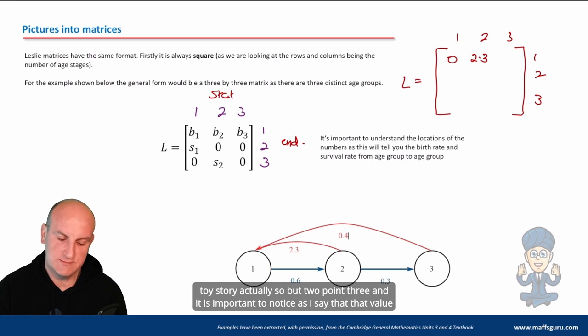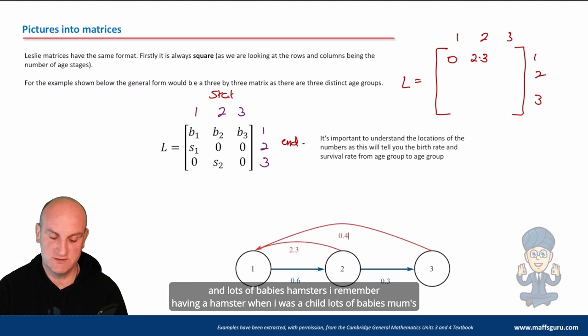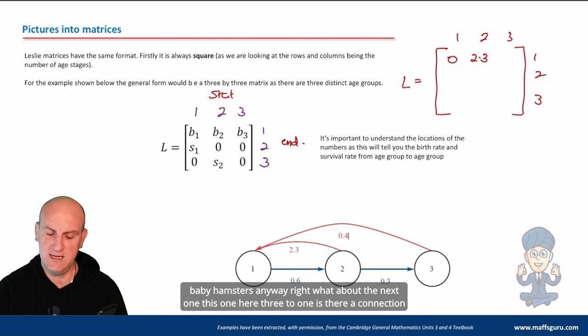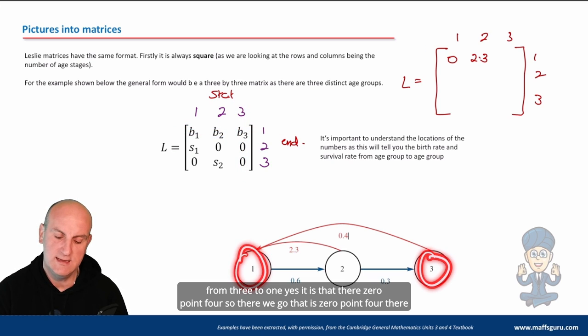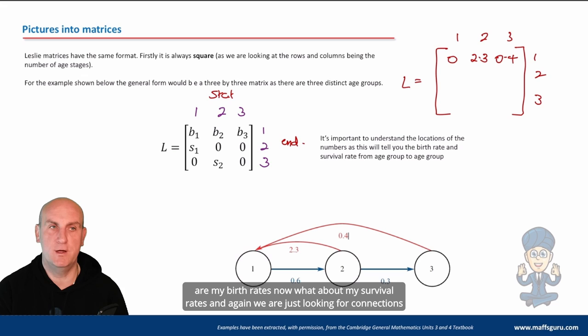So, but 2.3. And it is important to notice, as I say, that that value can be greater than one because there are populations or there are species who have lots and lots of babies. Hamsters. I remember having a hamster when I was a child. Lots of babies. Mum's face would melt every time those hamsters, which we thought were two boy hamsters, had little baby hamsters. Right, what about the next one? This one here. 3 to 1. Is there a connection from 3 to 1? Yes, it is that there. 0.4. So there we go. That is 0.4. There are my birth rates.